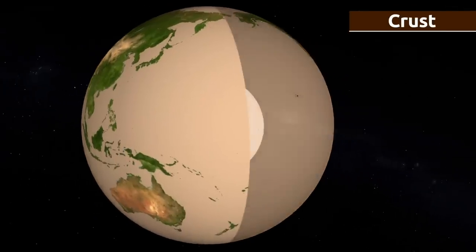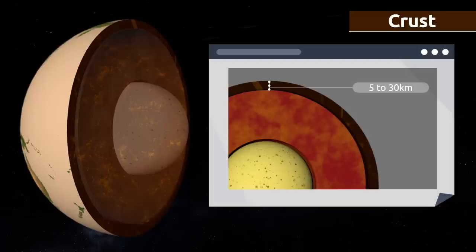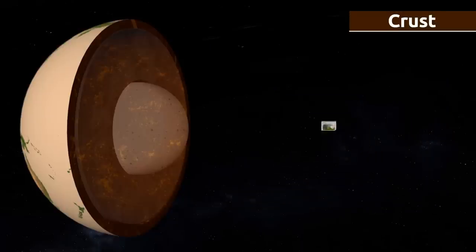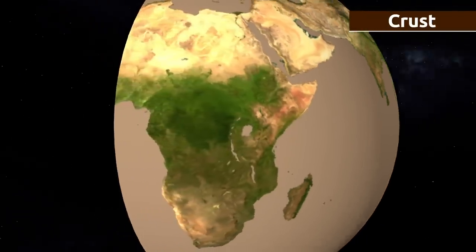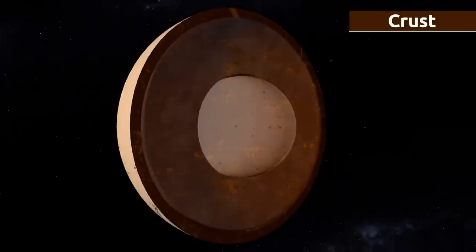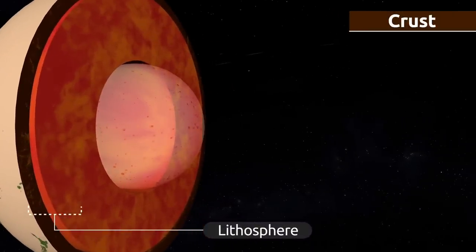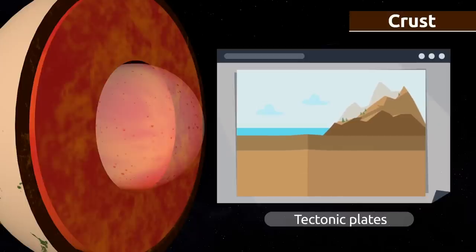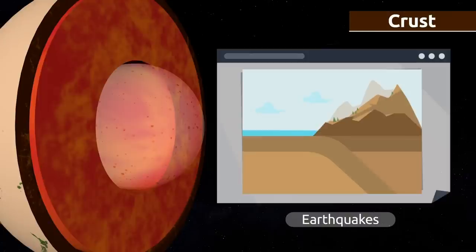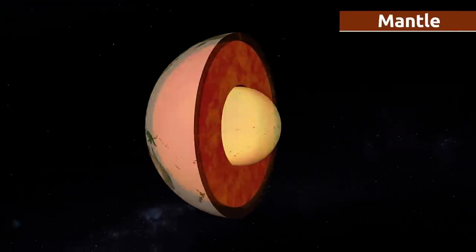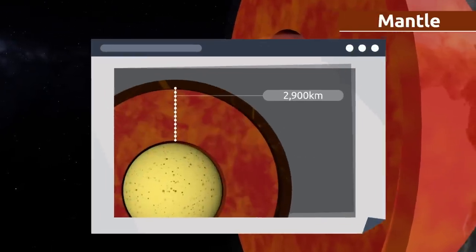The crust is the thinnest, outermost layer of the geosphere. Its thickness varies from 5 to 30 kilometers depending on location, and it is made up of continents and the bottoms of the oceans. The geosphere is broken up into several tectonic plates, which make up the crust and also the mantle, found in a layer called the lithosphere. Tectonic plates are constantly moving and molding the crust — their movements cause earthquakes.